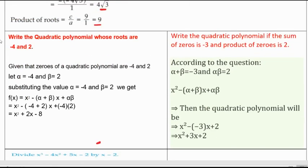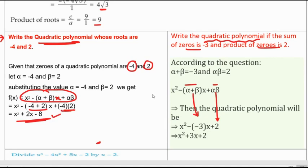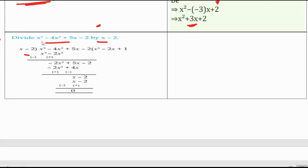The most important 2 marks or 4 marks question in polynomials is: write the quadratic polynomial. You have to apply the formula x square minus alpha plus beta into x plus alpha beta. That is x square minus sum of zeros into x plus product of zeros. This is the most important question not only in polynomials but also in 10th class board exam.